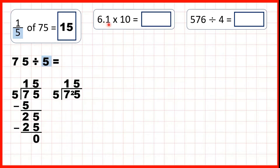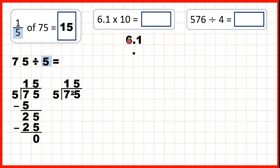6.1 times 10. Whenever we're multiplying or dividing a decimal number by 10, 100, or 1,000, we always start by writing out the number, then copying down the decimal point. We're multiplying, so the number will be getting bigger, which means that we're moving the digits to the left. And we're multiplying by 10, which has 1 zero. So, the digits are moving 1 square to the left. We copy the 6 down 1 square to the left, copy the 1 down 1 square to the left, and we now have the decimal point at the end of our number. And if the decimal point is at the end of a number, we have a whole number. So, our answer is 61.